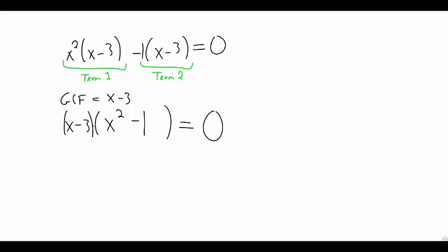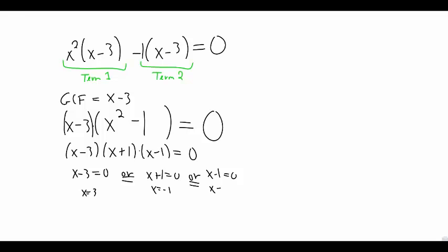Let's factor completely. x squared minus 1 factors as x plus 1 times x minus 1. Now we have a product equal to zero. We know how to solve something of this type.